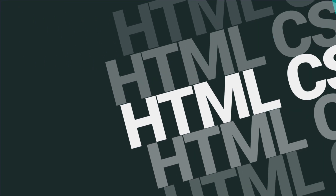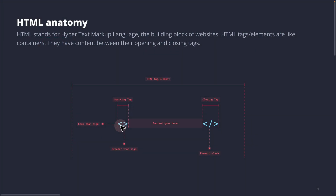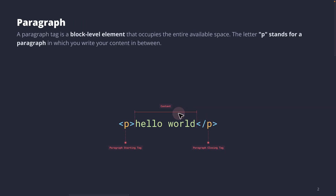Going back to our HTML slides, we learned that to create an HTML tag, we have to use a less than sign and a greater than sign. In between these, we place our HTML character. For example, to create a paragraph tag, we place the P character between the less than and greater than signs, which is called the opening tag.